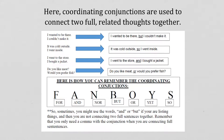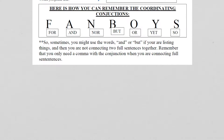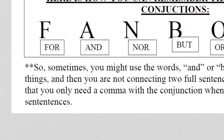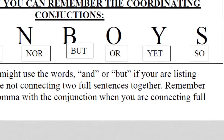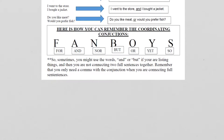Probably the easier type of conjunction to remember is the coordinating conjunction, because there's a way of remembering them. There's an acronym — that's when you have letters that stand for words. We can think of the letters F-A-N-B-O-Y-S: FANBOYS. If you can remember FANBOYS and what each letter stands for, you can remember all the coordinating conjunctions. FANBOYS: For, And, Nor, But, Or, Yet, So.